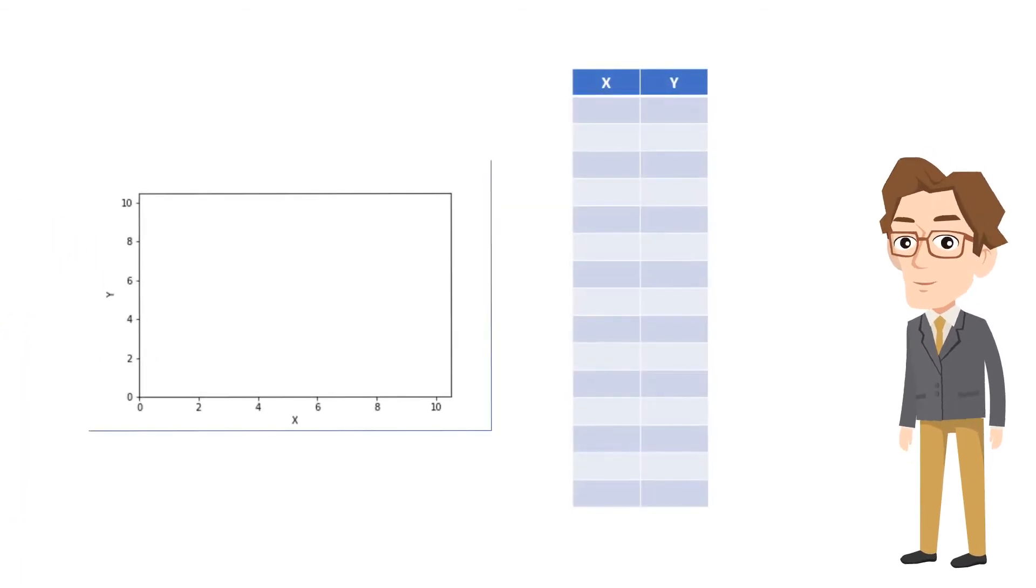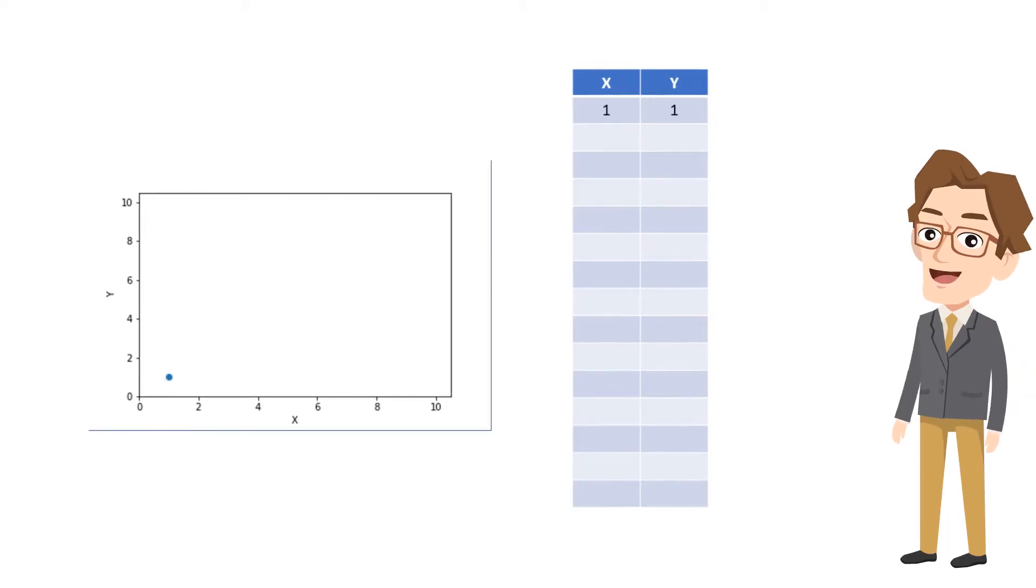For regression problems, suppose you have only one feature x and target value y. You are going to plot in graph - for x equal to 1, y also 1; for x equals 3, y equals 5, and so on.